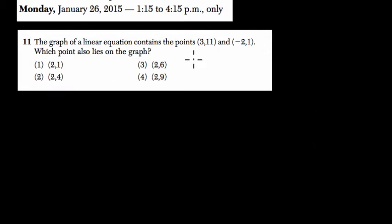Alright, so in this problem, they're saying the graph of the linear equation contains these two points: (3,11) and (-2,1). Which point also lies on the graph?